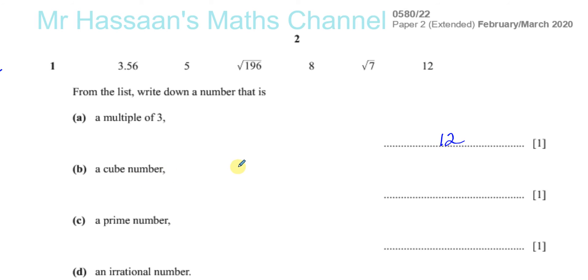A cube number is a number that when you cube it, you get that result. And you should know your cube numbers. I mean, one cubed is one, two cubed is eight. So, you can see straight away it's eight. Two times two times two. Nice and simple question.